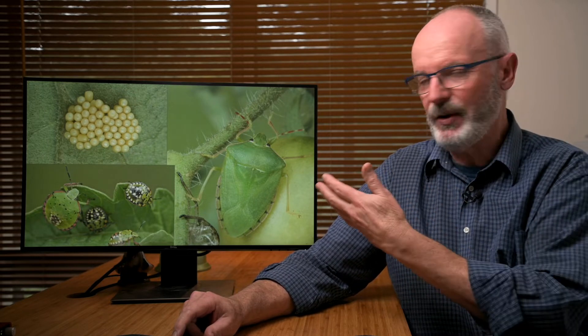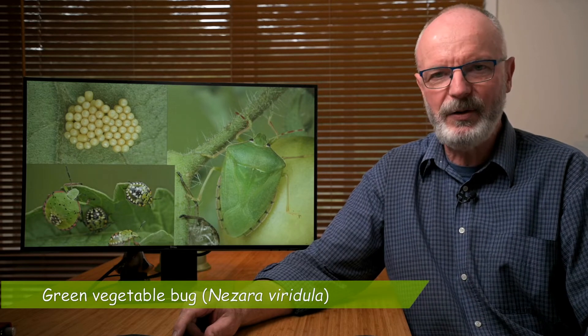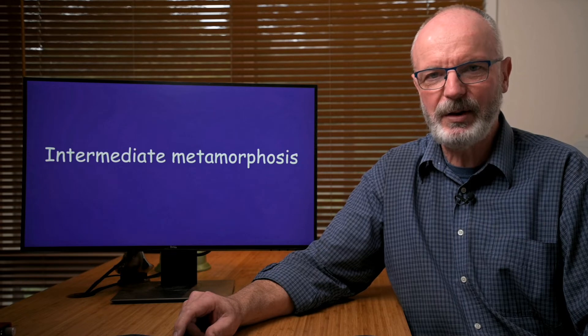Insects with incomplete metamorphosis include grasshoppers, bugs — this is a green vegetable bug — and earwigs and insects like that. But some insects have life cycles somewhere in between the two, and we call it intermediate metamorphosis. Common insects with this type of life cycle include whiteflies and thrips.